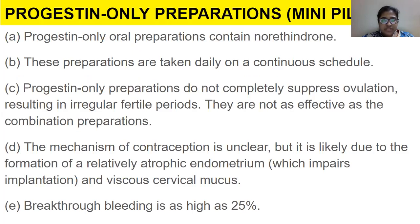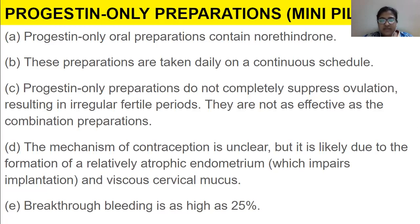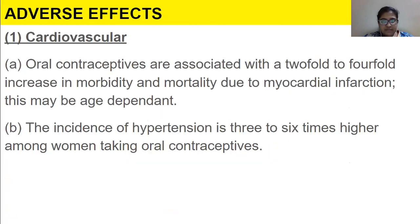Mini pills — progestin-only oral preparations — do not completely suppress ovulation, resulting in irregular fertile periods. They are not as effective as combination preparations. The mechanism of contraception is unclear, but it is likely due to formation of a relatively atrophic endometrium which impairs implantation and viscous cervical mucus. Breakthrough bleeding is as high as 25 percent.